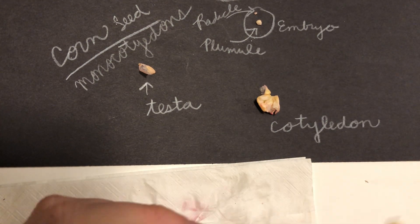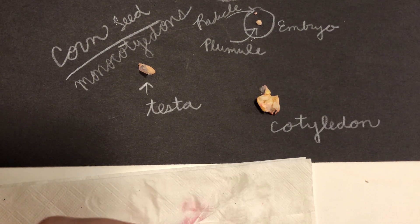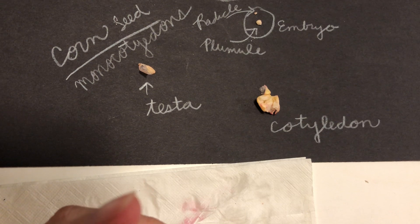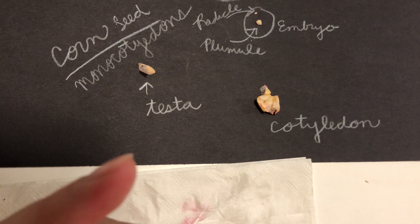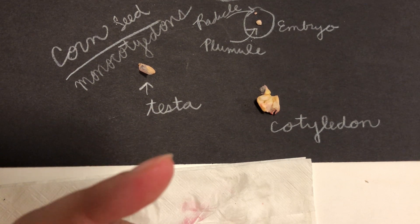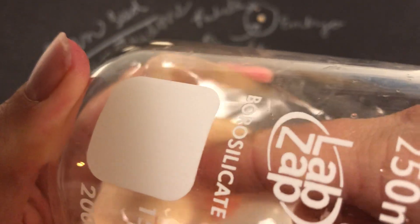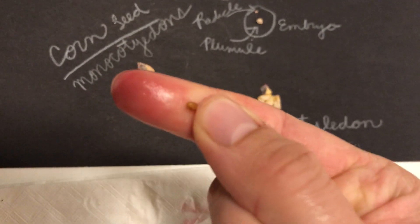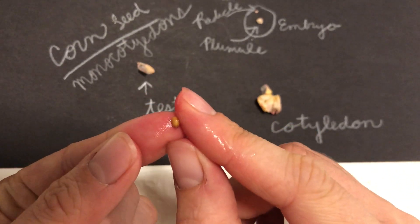There is another seed in here — it's much smaller. I think it's a radish seed. Good luck trying to dissect that one because it's super small. Your best bet on trying to figure out what kind of seed it is — monocotyledon or dicotyledon — is probably going to be to plant this one.